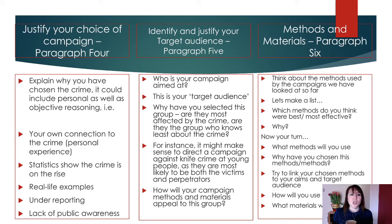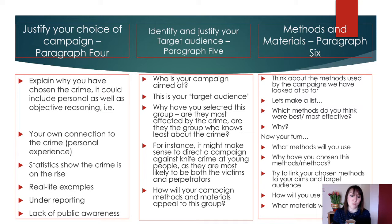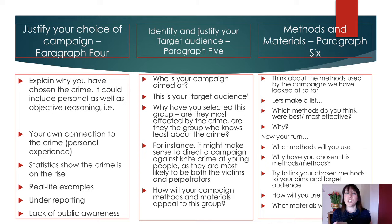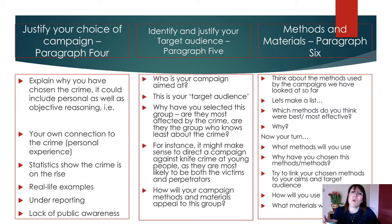Paragraphs 4, 5 and 6. You need to justify your choice of campaign — explain why you've chosen the crime, not just because it's on the brief. It could include personal reasons as well as objective reasoning, such as your own connection to the crime, statistics, real-life examples, under-reporting, or lack of public awareness. You need to do some research. Look into why your specific area is underreported and back it up with statistics. Look on the CSEW or crime statistics. If there are no statistics but the crime is happening, that itself is a reason — you need to raise awareness so people report or record it.